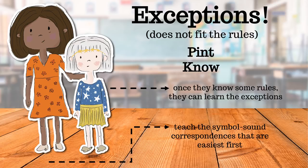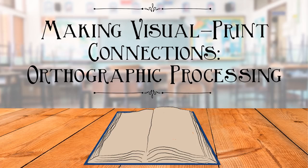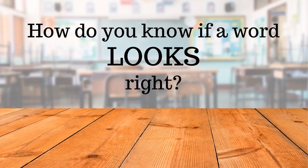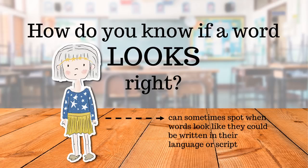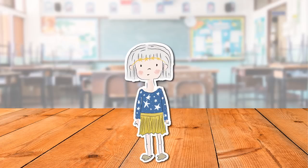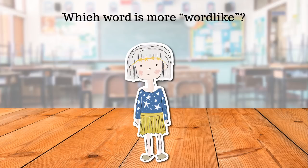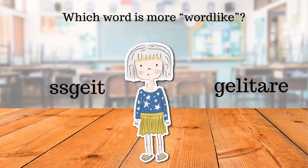Teach the symbol-sound correspondences that are easiest first. This will help children to feel confident and remember more early. Making visual print connections: orthographic processing. How do you know if a word looks right? Even very young children can sometimes spot when words look like they could be written in their language or script. In experiments, a child asked to pick which word is more word-like tends to select the one that fits the rules of her language more than 50% of the time. For example, given a choice between two options, a child is more likely to pick 'gelater' as a possible real word. Why? In English, SS cannot begin a word.